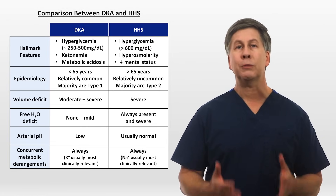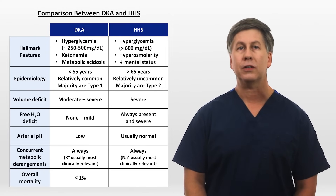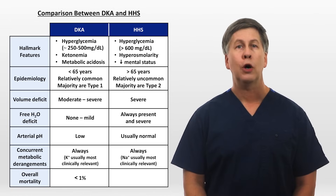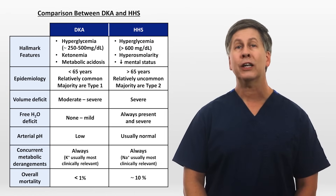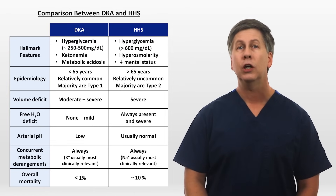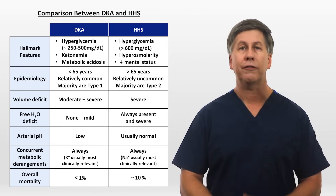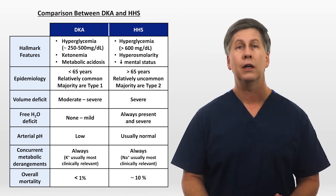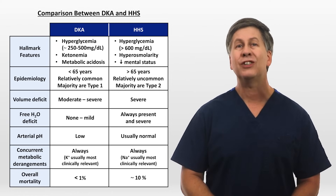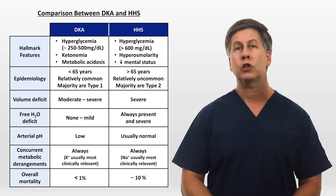Despite the complexity of its pathophysiology and the critically ill state in which many patients present, the mortality of DKA in the United States is less than 1%. In HHS, mortality is in the ballpark of 10%. In both cases, if the patient does die, the underlying trigger for the hyperglycemic crisis usually will have played the central role in the mechanism of death rather than the hyperglycemic crisis itself. For example, if someone who presents with DKA secondary to sepsis or pancreatitis dies during the admission, the cause of death is usually the sepsis or the pancreatitis rather than the metabolic derangements caused directly by the DKA.